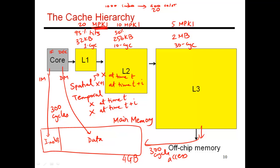Some other points I should mention is this notion of inclusive versus non-inclusive or exclusive. So an inclusive hierarchy refers to the fact that everything in the L1 can also be found in L2. So out of the 256 kilobytes in L2, 32 kilobytes is basically a duplicate of the data in L1.